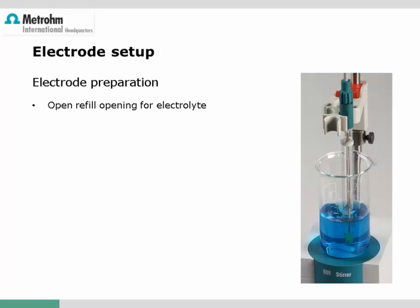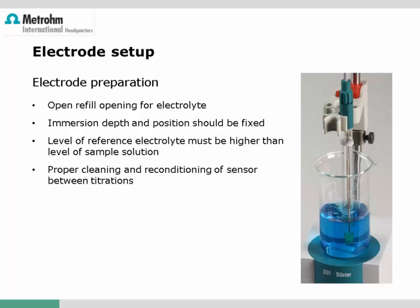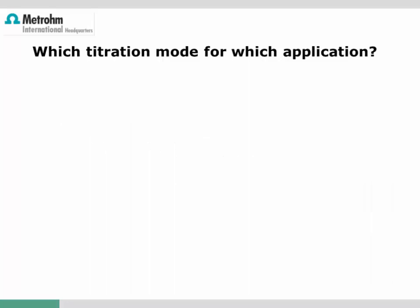For the electrode setup, don't forget to open the refilling plug for the reference electrolyte — otherwise the sample may block the diaphragm and the reference potential may become unstable. A fixed electrode holder should be used to ensure equal positioning of the sensor in the titration vessel and to avoid mechanical damage. Ensure the sensor is filled with enough reference electrolyte. Once the titration is finished, rinse the sensor, but do not wipe off remaining liquid from the sensor — the risk of electrostatically charging or damaging the sensor is much higher than any carryover risk.